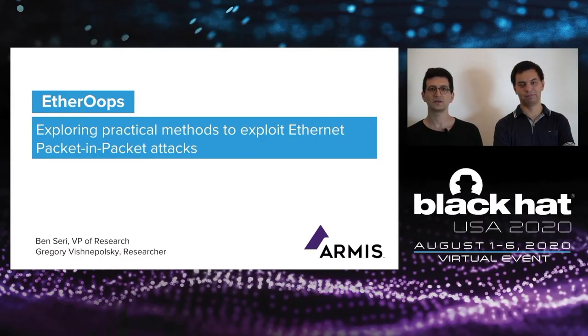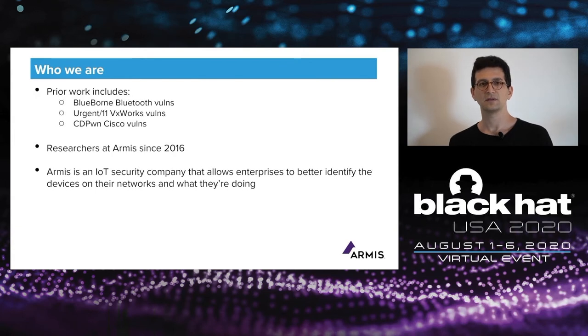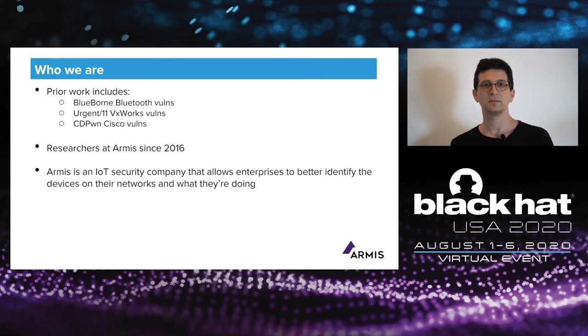Hi, my name is Ben Seri. I'm VP of research at Armis. Today with me is Greg, a researcher on my team. We're going to talk about several methods we've explored to exploit packet-in-packet attacks on the internet. These types of attacks can allow attackers to bypass network perimeter security such as NATs and firewalls. Armis is an IoT security company that focuses on providing visibility into the behavior of unmanaged devices in enterprise networks, medical facilities, and manufacturing environments. Researching embedded devices and wireless communications led us to some interesting discoveries presented in previous Black Hat talks.